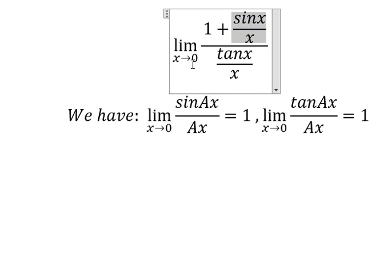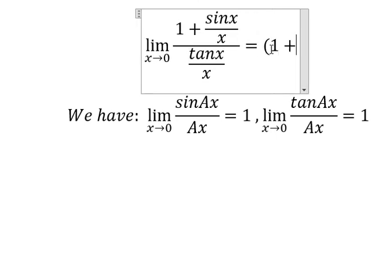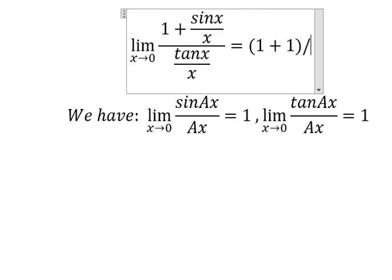So in this situation, when x goes to number zero, this one you got about one, this one you got about one. So we have one plus one over number one.